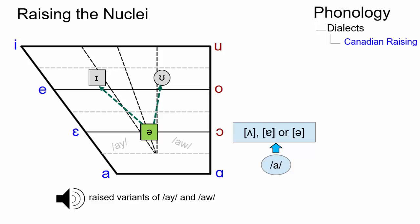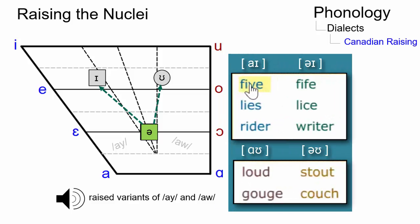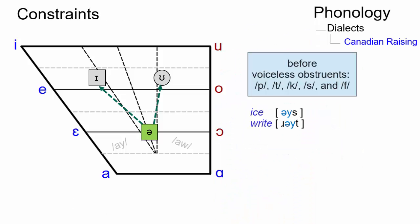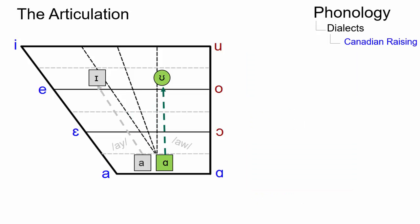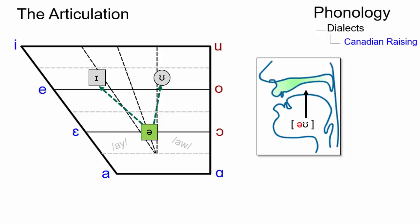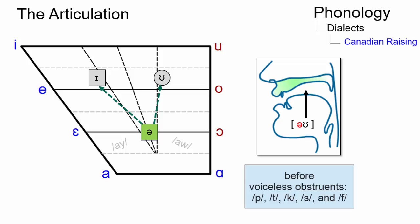Let's listen to the raised variants. Canadian raising occurs before voiceless obstruents. Vowels before voiced obstruents are usually not raised. The more common pronunciation is articulated with the tongue in a low position, whereas with Canadian raising the tongue is raised to a mid position when the vowel precedes the voiceless consonants mentioned before.